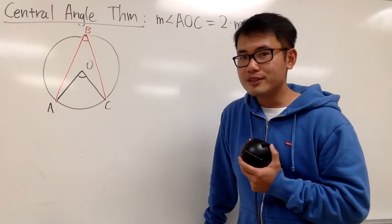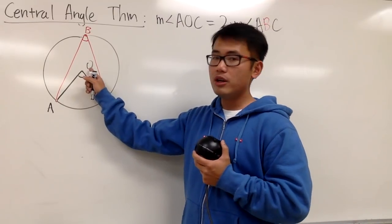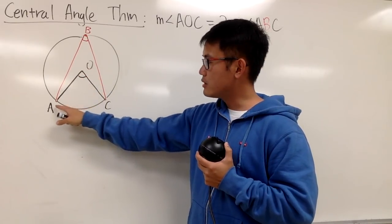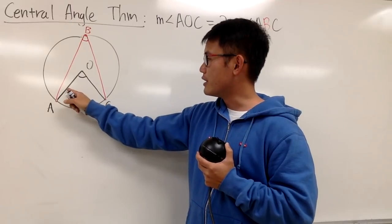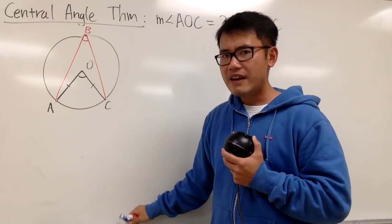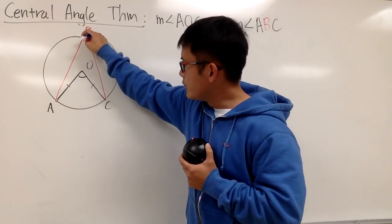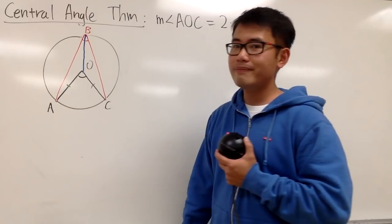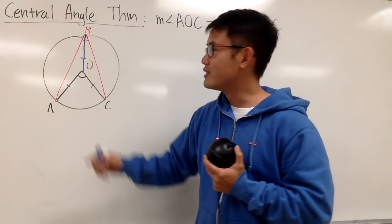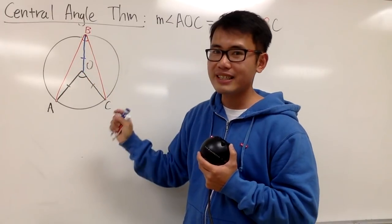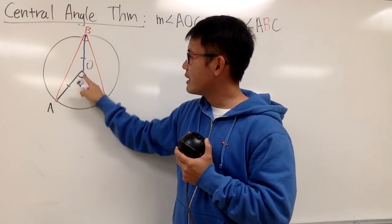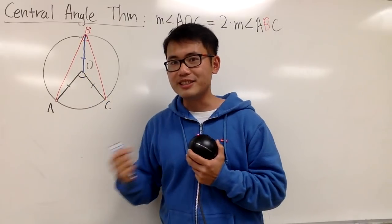How can we prove this? First, remember that O is the center of the circle. When you go from the center to the circle, each segment is a radius. So the segments OA, OC, and OB are all equal. We can connect B to the center as well — A, B, and C are all connected to O. By looking at the triangle on the left, triangle ABO is an isosceles triangle.